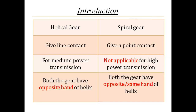In case of Helical Gear, the contact between two gears is a line contact — initially there is a point contact, but it gradually increases to a line contact. But in case of Spiral Gear, there is continuous point contact between two gears. This happens because the axis of rotation of the two gears are non-parallel and non-intersecting, and lie in different planes. That is why there is only a point contact continuously.